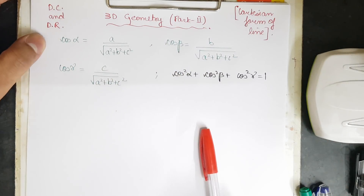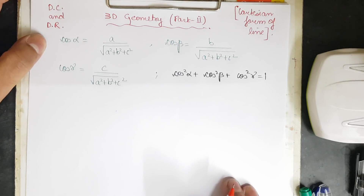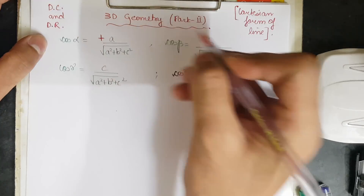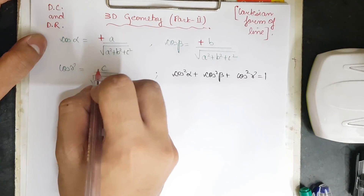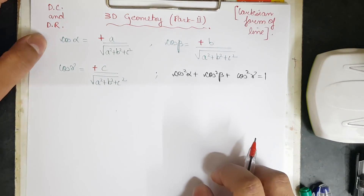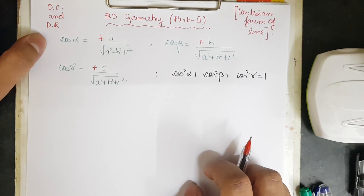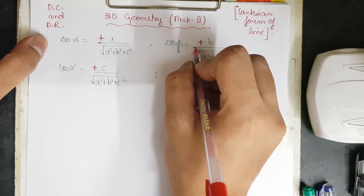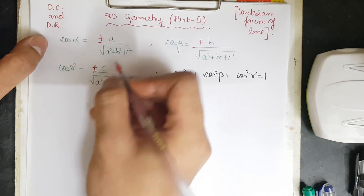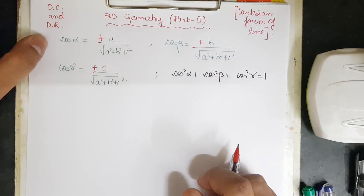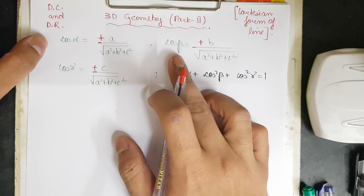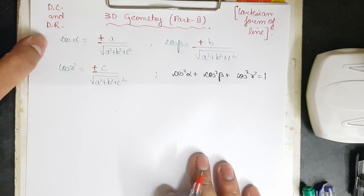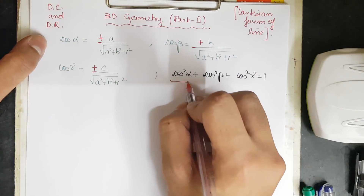We had measured the angle along the positive direction of the axis. But if we measure the angle along the negative direction, that is 180 minus θ, we also get a negative sign. So the direction cosines can be written as ±a/√(a²+b²+c²), ±b/√(a²+b²+c²), and ±c/√(a²+b²+c²) for cos α, cos β, and cos γ respectively.